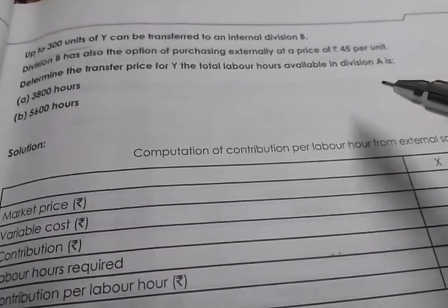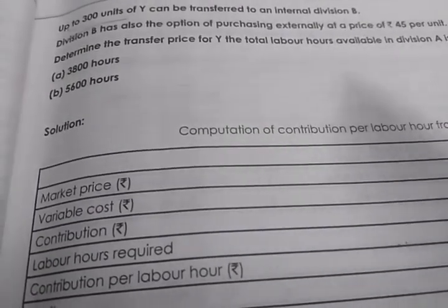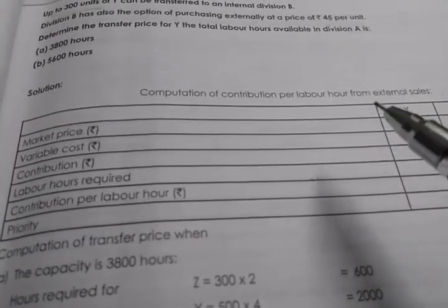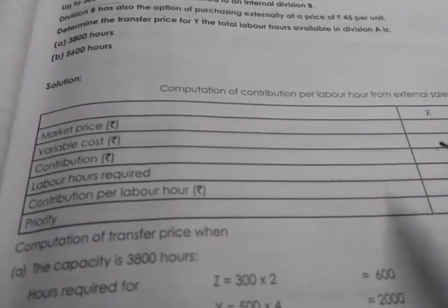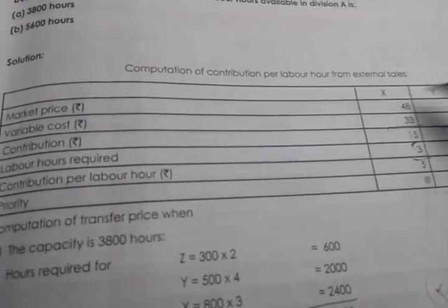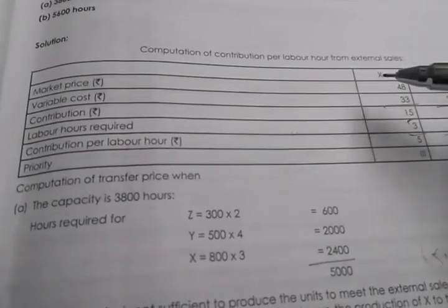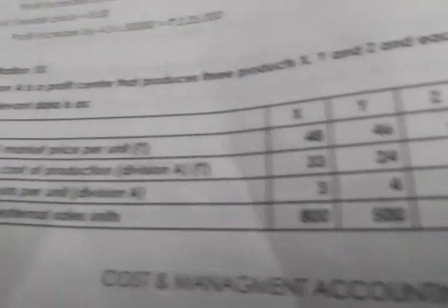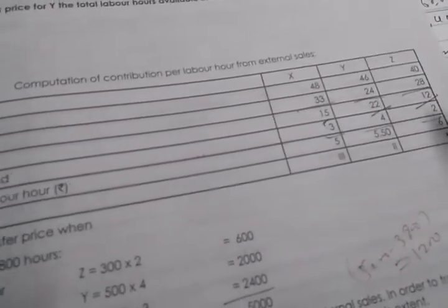Let us start. First we have to calculate the contribution per labor hour for external sales. Market price and variable cost are given. For products X, Y, and Z we write: market price minus variable cost gives us contribution. Then we note the labor hours required — three, four, two respectively — which are already given.